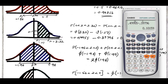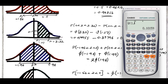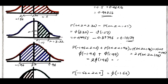Let us find phi of 1.96. Use shift 1, distribution, Q — that is 2. Enter 1.96, get the value from the calculator for Q of 1.96, then multiply by 2. I got 0.95. So 0.95 will be the answer for the area of the range modulus z less than 1.96.